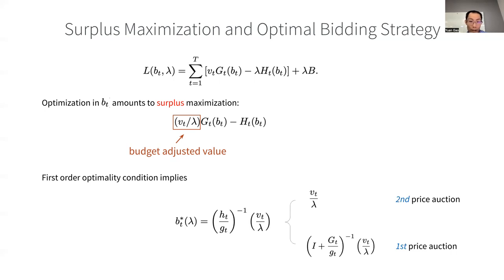And it turns out that the small h over g is an identity. Therefore, the optimal thing to do in a second-price auction is simply to bid the lambda-adjusted value.